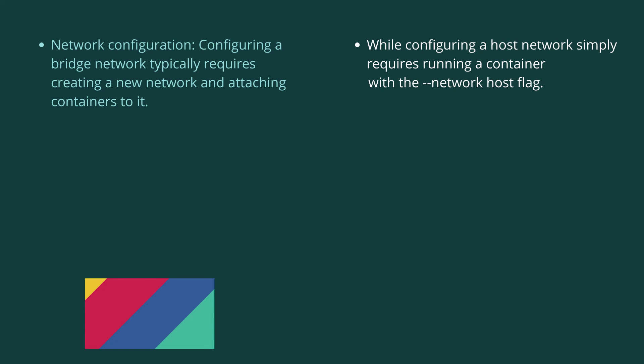Configuring a bridge network typically requires creating a new network and attaching containers to it, whereas configuring a host network simply requires running a container with the network host flag.